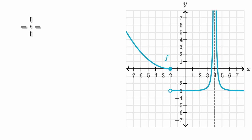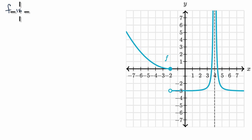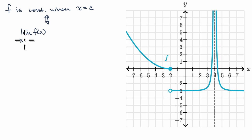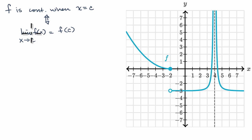What we're going to do in this video is explore continuity over an interval. But to do that, let's refresh our memory about continuity at a point. So we say that f is continuous when x is equal to c if and only if the limit of f of x as x approaches c is equal to f of c. When we first introduced this, we said it looks a little bit technical but it's actually pretty intuitive.